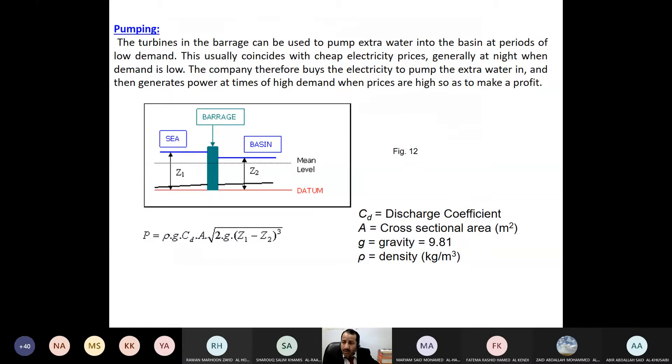Sometimes we pump the water to help the tidal system. We pump water when the cost of electricity is cheap. At night, the cost of electricity is usually cheaper than during the day, so we buy electricity to pump water to the reservoir when it's cheap. When it's costly during the day, we generate electricity this way. The water is pumped to the basin, and the difference in height is considered in the formula.